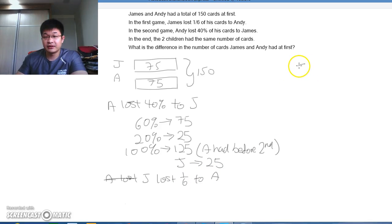So this 25 would therefore be 5 units because he's already got 1/6 given to Andy. So when we continue here, 5 units would actually be 25, so 1 unit would be 5. James initially had 6 units, so 6 units would be 30.